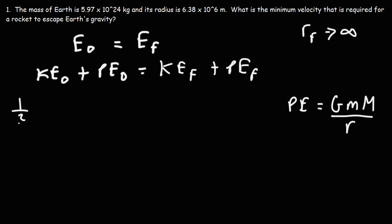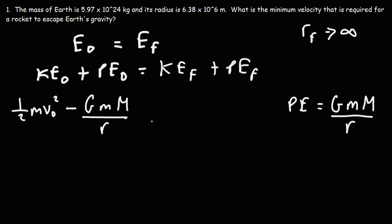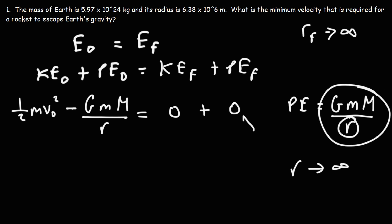The initial kinetic energy of the rocket is 1/2 m v-initial squared. The initial potential energy uses that formula but with a negative sign — it's negative G times the mass of the rocket times the mass of the Earth divided by R. The final kinetic energy and final potential energy will both be 0. If the rocket escapes Earth's gravity with the minimum velocity, that velocity is just above 0, so we set the final KE to 0. As for the final potential energy, when the rocket is very far away, R goes to infinity, so the fraction goes to 0 — making the final potential energy 0.